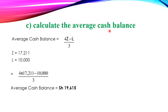Part C: calculate the average cash balance. The average cash balance is given by (4Z minus L) divided by 3. We have Z equal to 17,211 and L equal to 10,000. Substituting into the formula gives an average cash balance of 19,615 shillings.